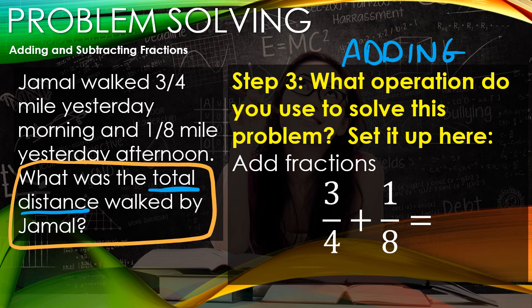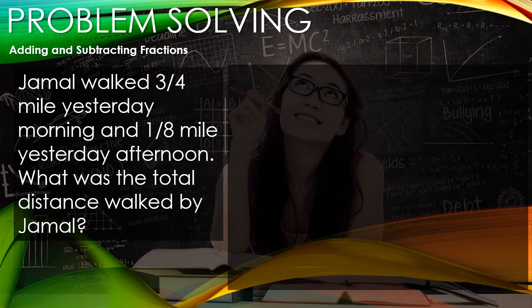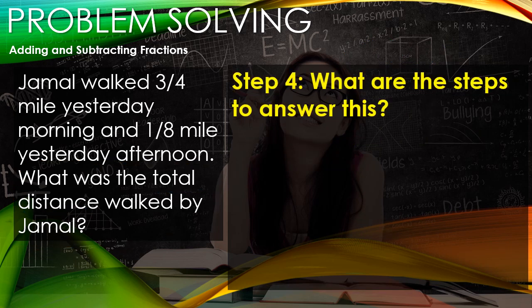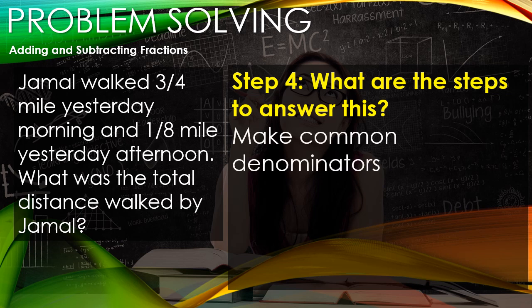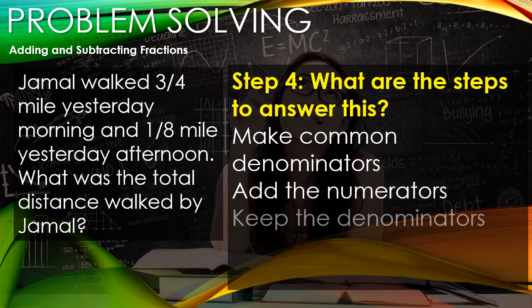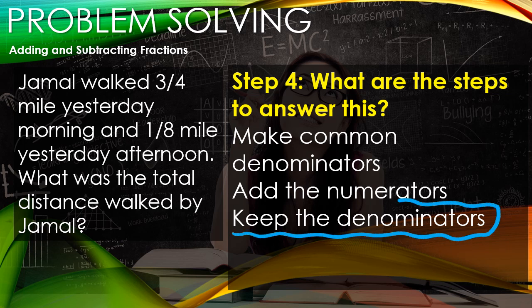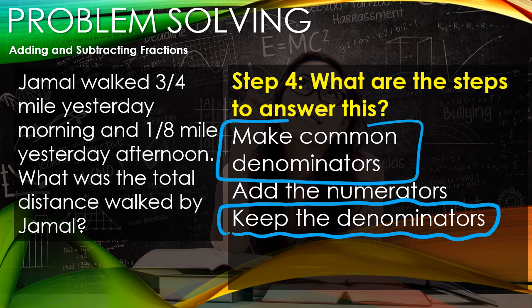Now we have here what are the steps to answer this question? We know that we need to make common denominators first. We're gonna add our numerators together, but we're going to keep the denominator the same. So whatever we made with common denominators in this first part, we're gonna keep the denominators the same.